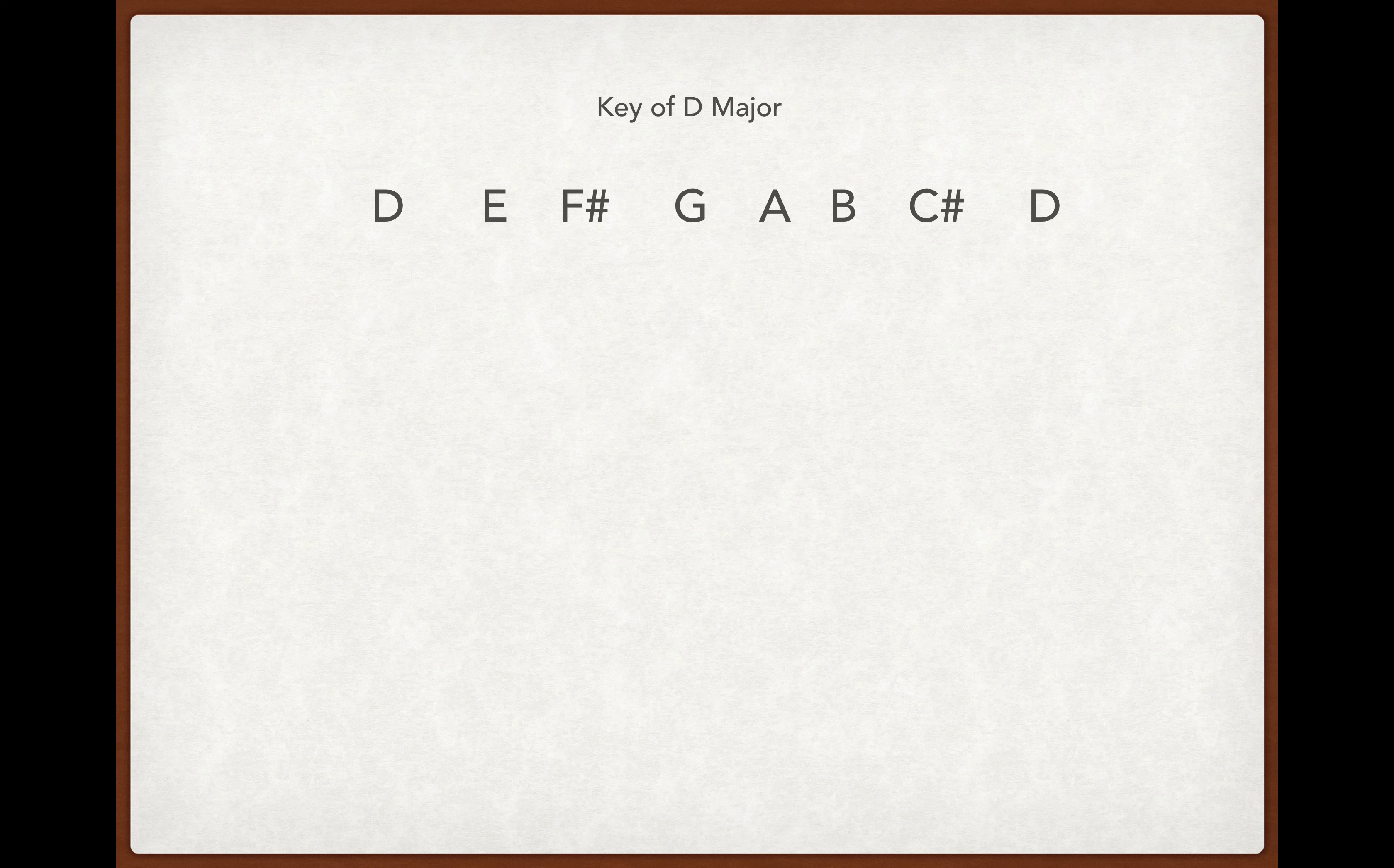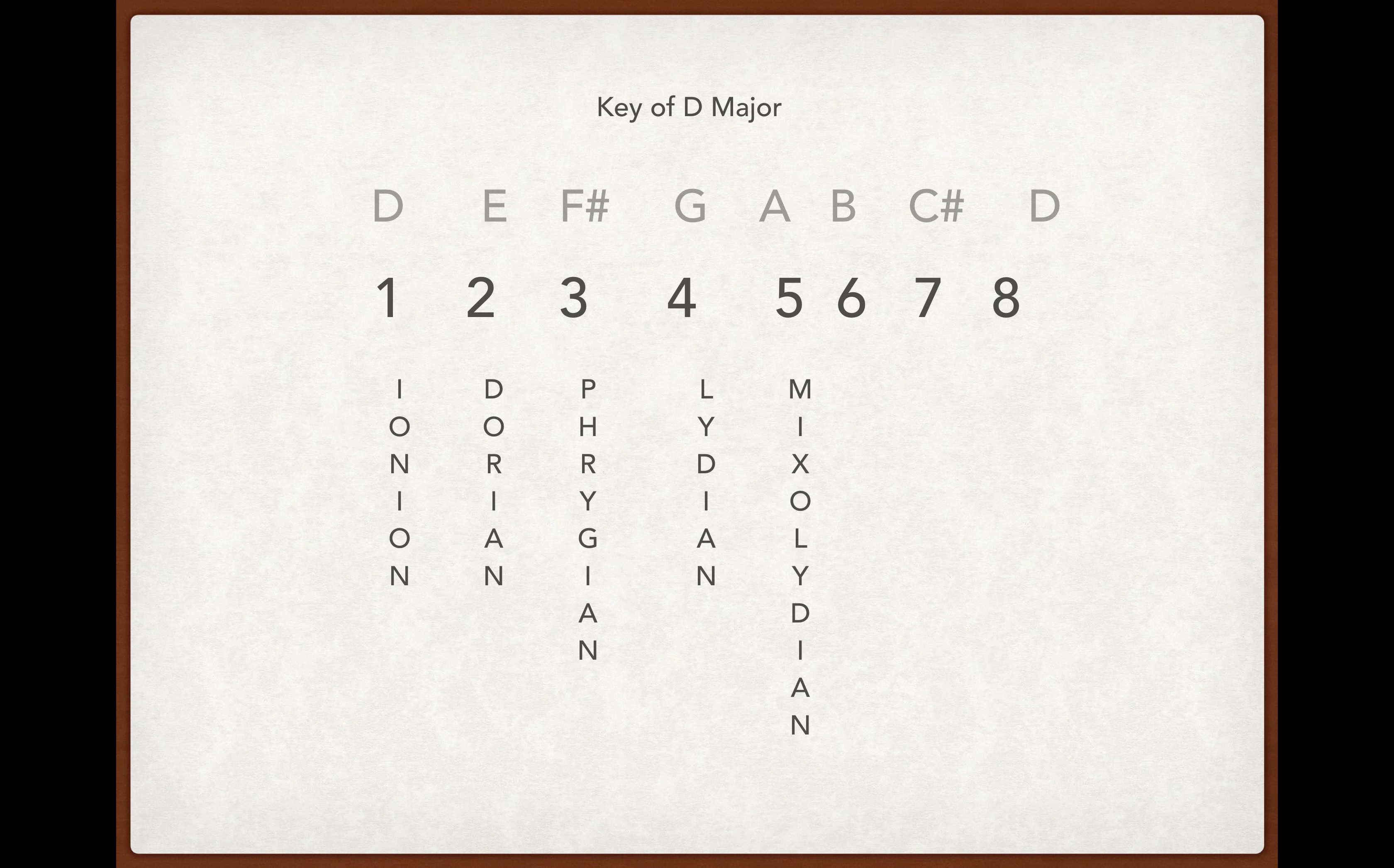If we assign numbers to them, we know that one is Ionian, and we can walk down the line: Ionian, Dorian, Phrygian, Lydian, Mixolydian, Aeolian, Locrian.